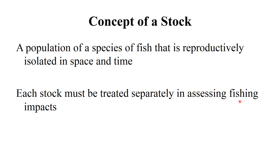If we are going to assess the fishing impact on fish resources, we have to treat each stock separately. Each stock must be considered independently. For instance, there is one tuna stock here and a different tuna stock elsewhere — these two stocks are completely separate.